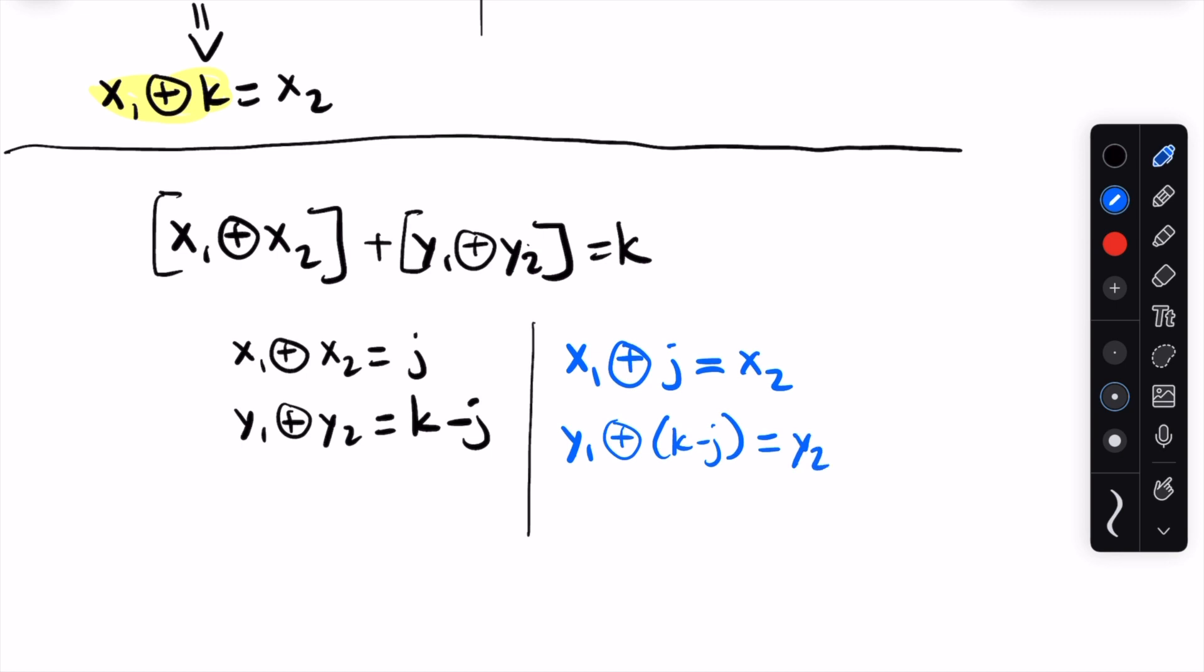So this is nice. x2 and y2 are isolated on one side of the equation, which is what we want, since we can now solve for the coordinates that we're looking for, whose xor with the current element will give us k. x1 and y1 will simply be the current element that we're iterating at. So we know those values. We also know k, since it's passed in. But we don't know what j is. j is just some unknown value that we defined as the xor of x1 and x2.